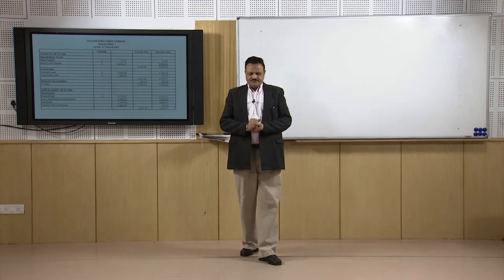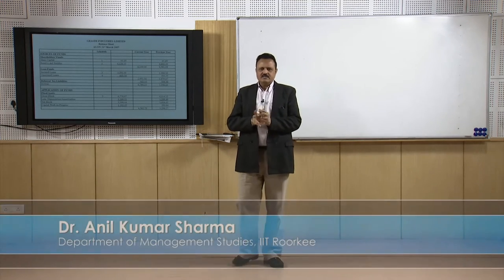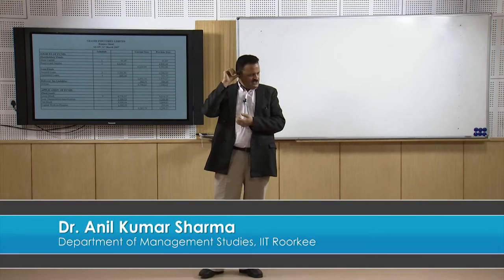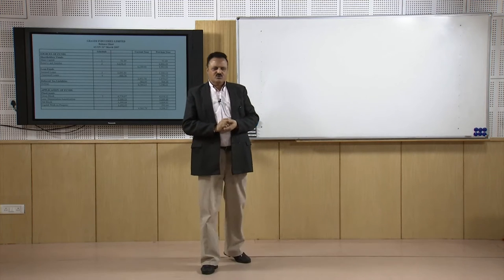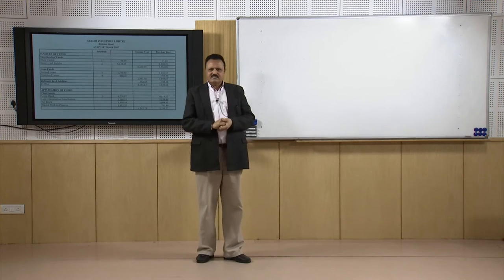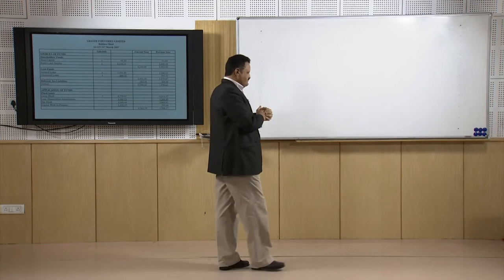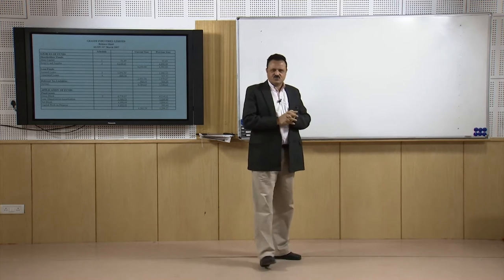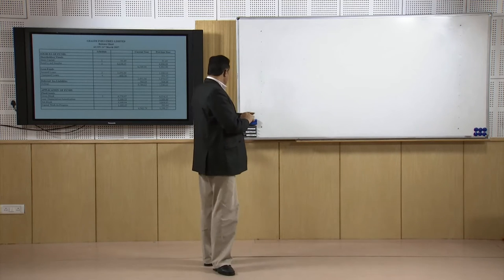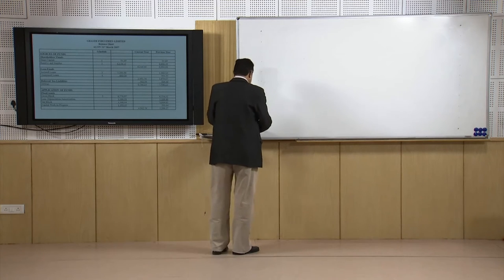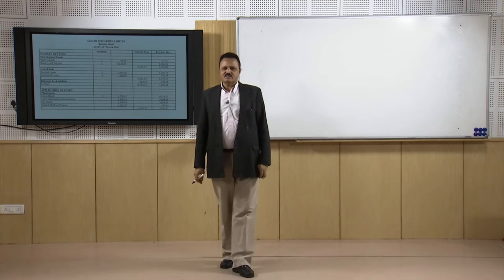Welcome students. We were talking about liquidity ratios. In my previous discussion I covered how we calculate the current ratio, what it means, and its relevance for liquidity management. It is calculated by dividing total current assets by total current liabilities, and the rule of thumb for this ratio is 1.33 is to 1.